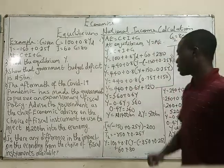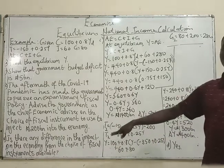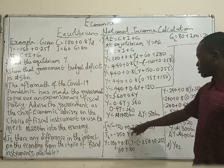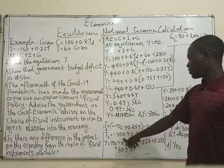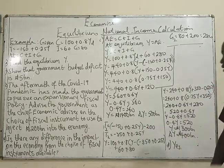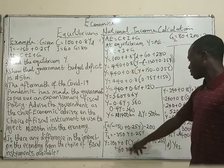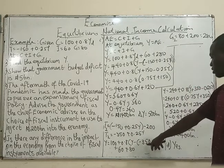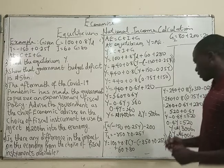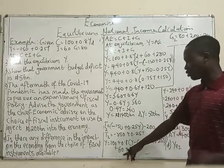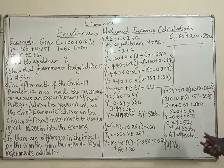The initial tax function is minus 150 plus 0.25Y. The new tax function after a reduction of 200 billion is T2 equals minus 150 plus 0.25Y minus 200, which simplifies to minus 350 plus 0.25Y. So Y equals 100 plus 0.8 times bracket Y minus bracket minus 350 plus 0.25Y, plus 60 plus 80. Note: government spending stays at 80, not 280.